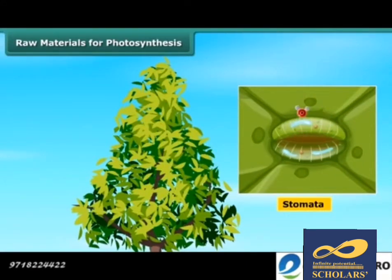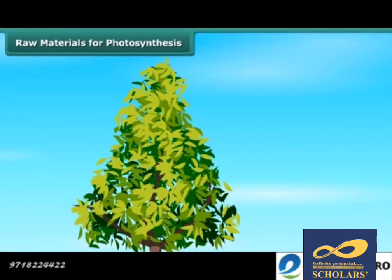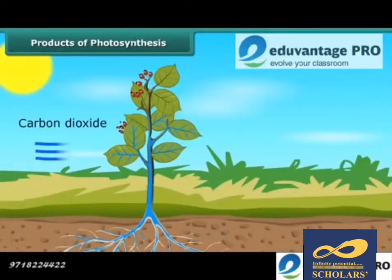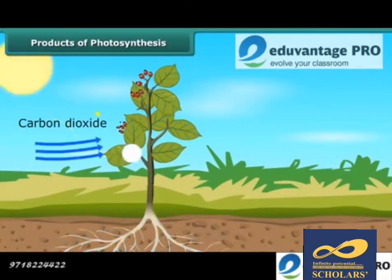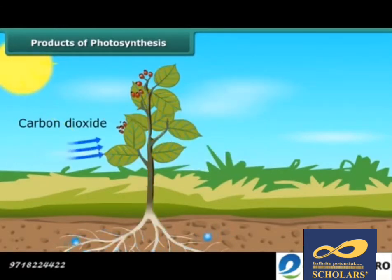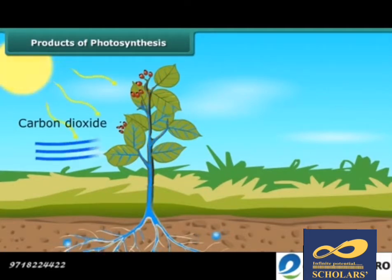Such pores are called stomata, and these pores are surrounded by guard cells. After reaching the leaves, carbon dioxide and water react in the presence of sunlight to form carbohydrate. The carbohydrate is ultimately converted into starch, which gets stored in different parts of the plant. Therefore, the first food product formed during photosynthesis is starch, which is also an example of carbohydrate.